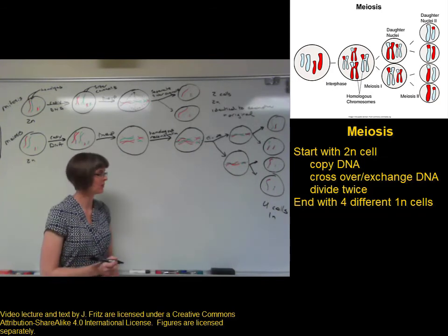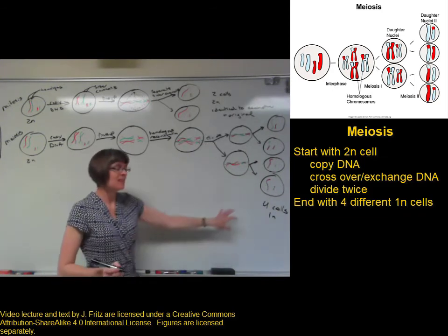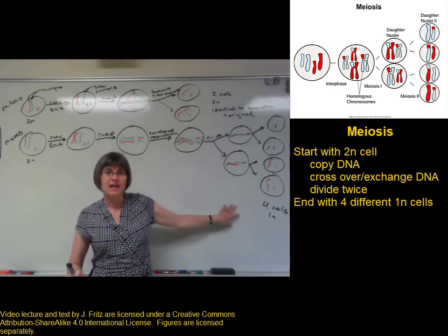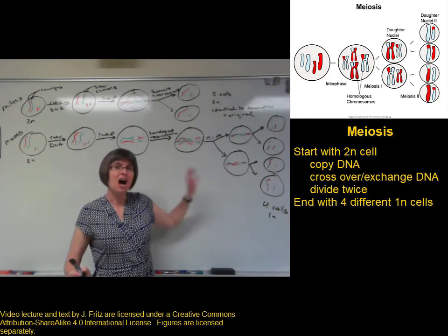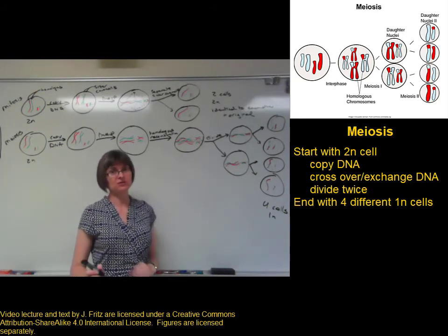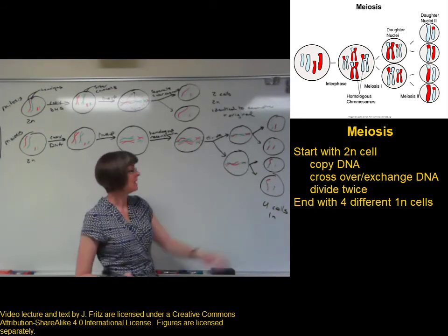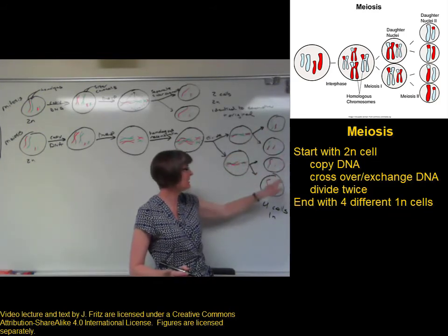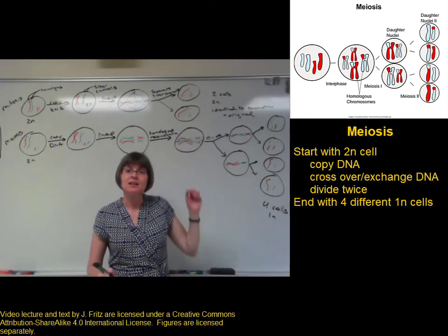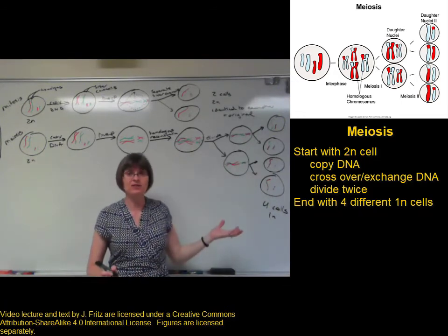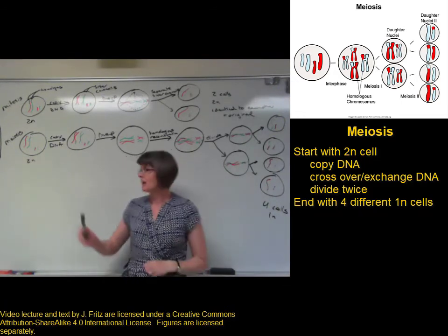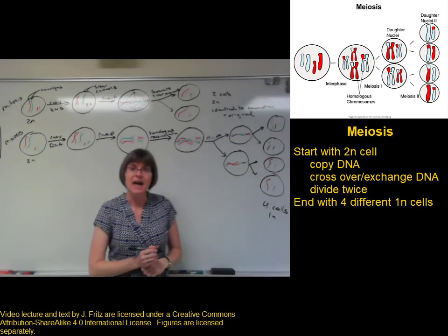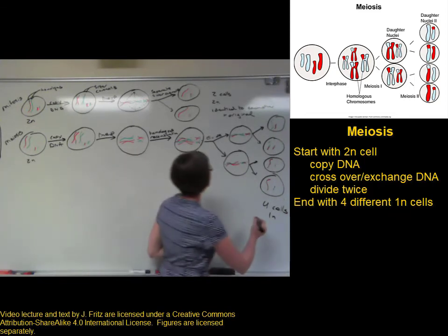Each cell has one long and one short — one copy of each chromosome. These are haploid cells, and they are different from each other. All four of these cells are slightly different; none of them look the same as each other, and none of them look the same as the original cell.